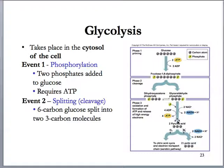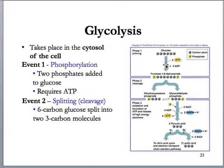Through this series of reactions represented by this arrow, we take each one of these three-carbon molecules and generate two ATP from each, giving us four ATP total from the energy harvesting phase — two from each three-carbon molecule. Because we had to put two ATP in during the energy investment phase, and we get four ATP out from the energy harvesting phase, our net gain is only two ATP. We also get two NADHs — one from each of the three-carbon molecules.